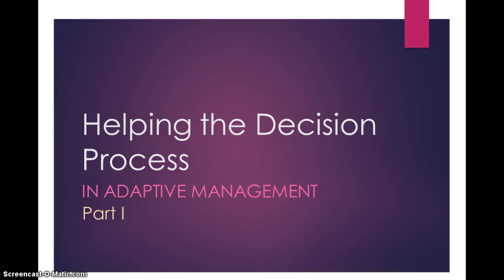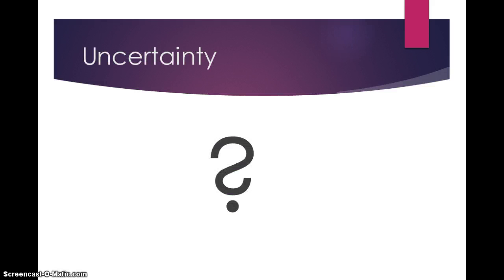This lecture is part 1 of 2 addressing helping the decision process in adaptive management. There will always be uncertainty in our environmental management decisions. However, there are some aids to decision making available for environmental management professionals with pros and cons to consider. The first part of this lecture will focus on modeling and research. The second part will focus on adaptive management as a learning tool.